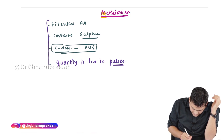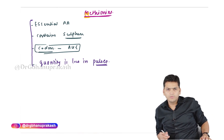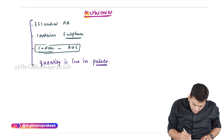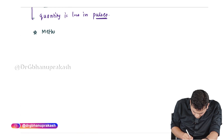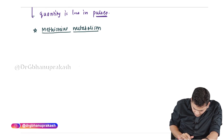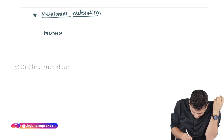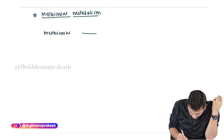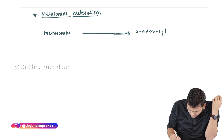These are the basic points one should be aware of regarding methionine. Now, the methionine metabolism is a very important part. What happens in methionine metabolism is that methionine can convert into a molecule referred to as S-adenosyl methionine.